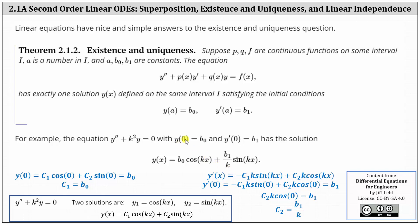Let's first verify y(0) = b₀. Subbing in zero for x, we have c₁·cos(0) + c₂·sin(0) = b₀. Simplifying, we get c₁ = b₀. For y'(0) = b₁, we get c₂ = b₁/k. So this does verify this is the solution to the initial value problem.